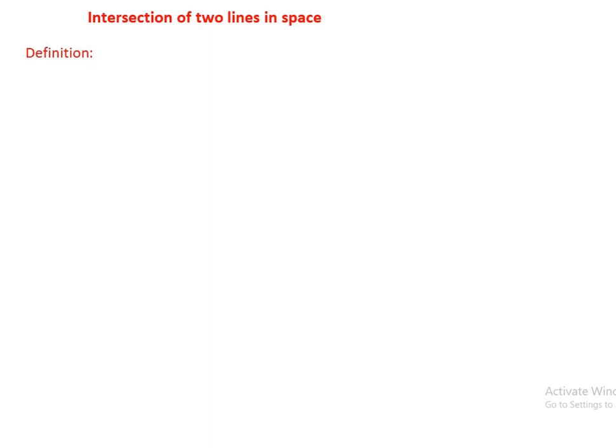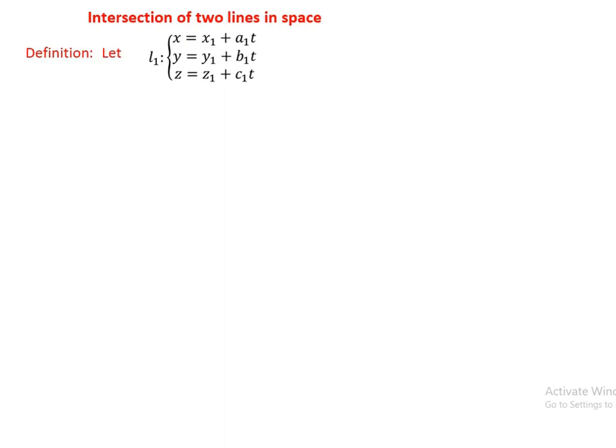Let's start from definitions. Let line L1 be given in parametric form: x equals x1 plus a1*t, y equals y1 plus b1*t, z equals z1 plus c1*t. And let L2 be given as: x equals x2 plus a2*r, y equals y2 plus b2*r, z equals z2 plus c2*r.